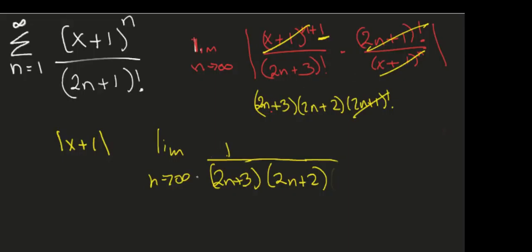Now what? Now you can find the limit of that is just one over infinity, and that's zero. So it's convergent for all x's. Negative infinity to positive infinity.